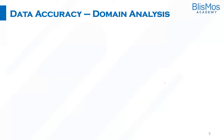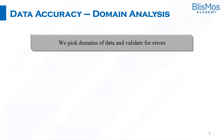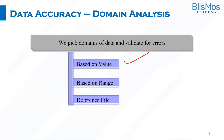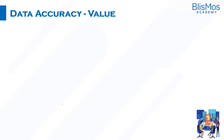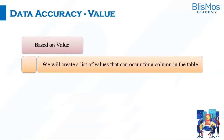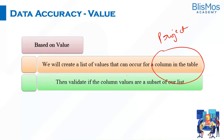Coming back to domain analysis — how do we look at data accuracy within the domain? We look at domain analysis in three ways: based on value, based on range, and based on reference file. When we say domain, we are talking about a column in a table — what is the domain of that column and how do we specify values based on it. When we talk about value, we create a list of values that can occur for a column as per the project specification.